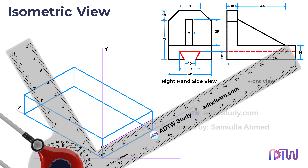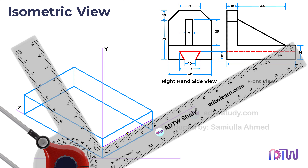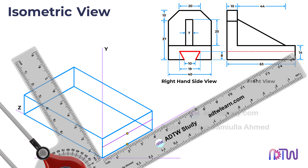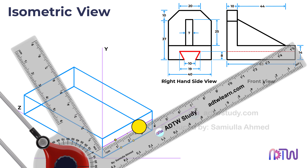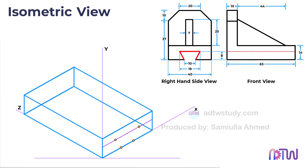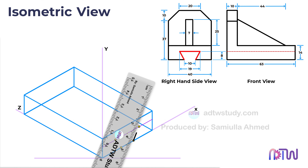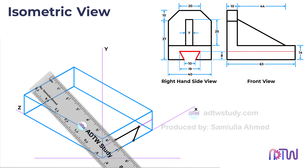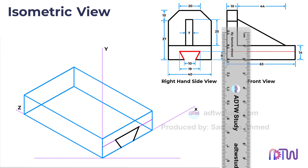Next we need to mark the center point of the width of the slot. Since the total width of the object is 40 millimeters, the center point will be located at 20 millimeters from the side of the base. From this center point, mark points 5 millimeters away on either side to represent the 10 millimeters width at the bottom of the slot. Similarly, mark points 9.5 millimeters away from the center point on either side to represent the 19 millimeters width at the top. Finally, join these points to complete the outline of the slot and add the necessary details to fully represent it.